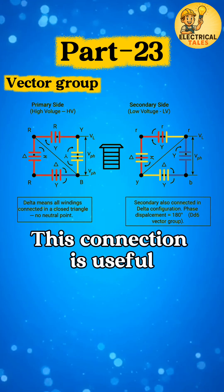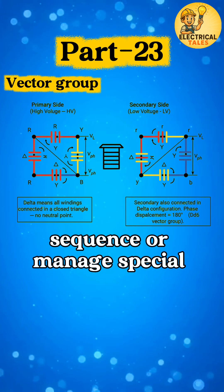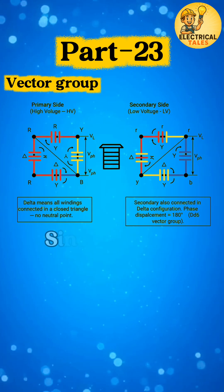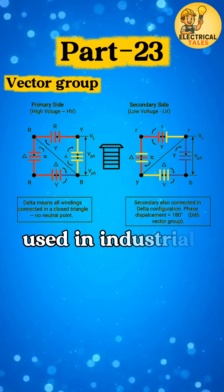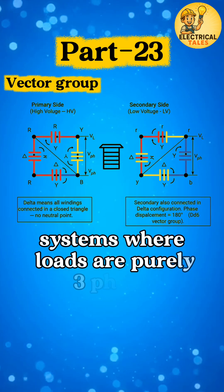This connection is useful when you need to reverse the phase sequence or manage special load balancing conditions. Since there's no neutral, it's used in industrial and transmission systems where loads are purely three-phase.